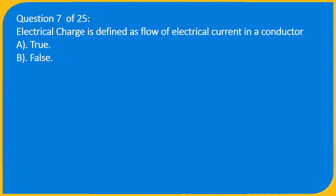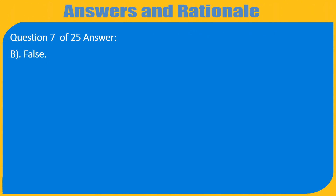Question 7 of 25: Electrical charge is defined as flow of electrical current in a conductor — A. True, B. False. Answer: B. False.